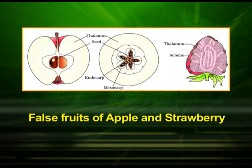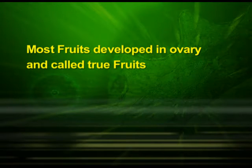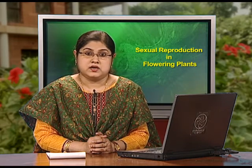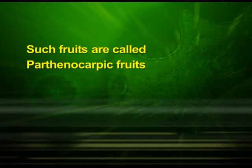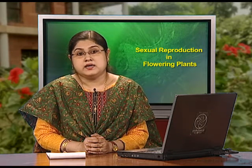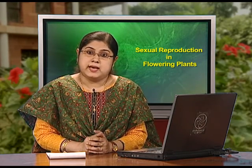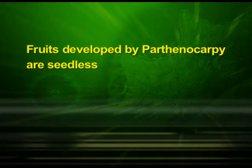We can observe the sections of false fruits of apple and strawberry in this diagram. Most fruits develop only from the ovary and are called true fruits. Although in most species fruits result from fertilization, in a few species fruits develop without fertilization — such fruits are called parthenocarpic fruits. Banana is one such example. Parthenocarpy can be induced through the application of growth hormones, and fruits developed by parthenocarpy are seedless.